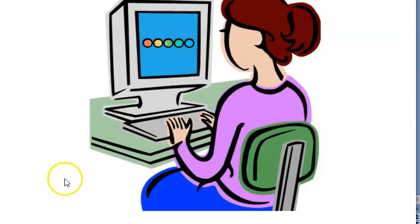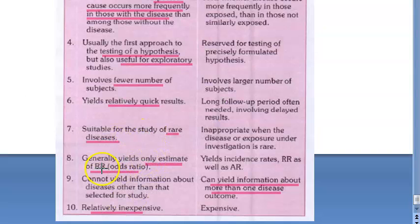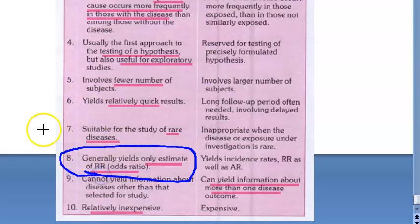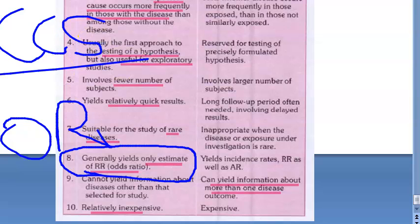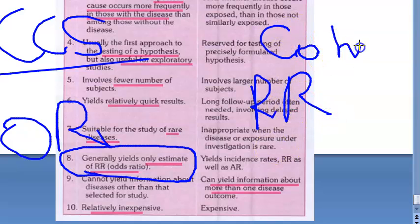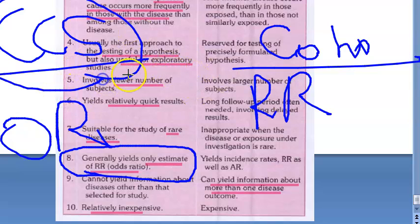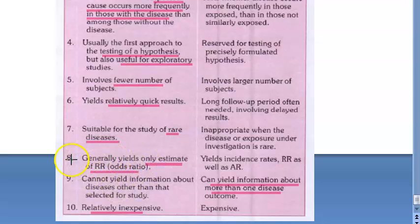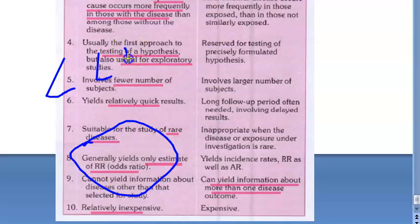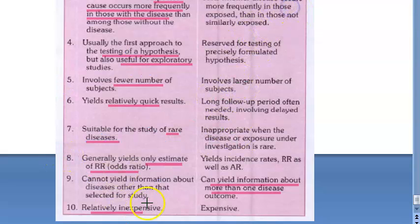A case control study generally yields only an odds ratio, not a relative risk. The odds ratio — calculated as (a × d) / (b × c), the cross-product ratio — is not as precise as relative risk. For example, an odds ratio of 8 means smokers have 8 times the risk of getting lung cancer compared to non-smokers. This is the strength of association, but it is not as exact as relative risk, which you get from a cohort study.